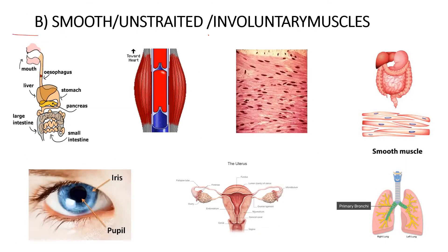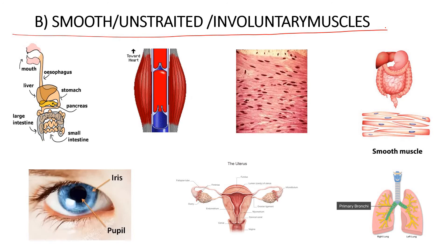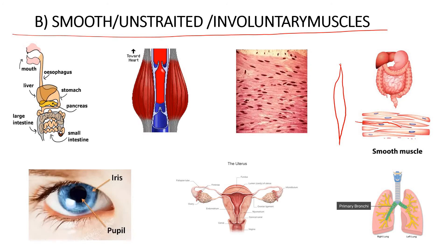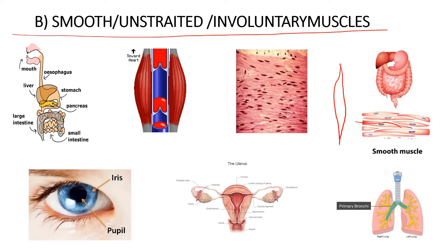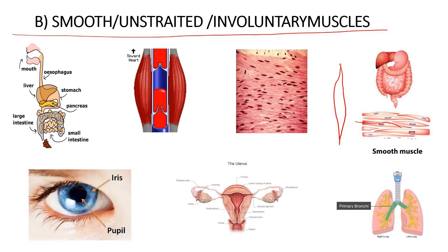The second type is called smooth, unstriated, or involuntary muscles. These are spindle-shaped in structure with no dark and light bands present — that is why they are called smooth muscles. They have a single oval-shaped nucleus.